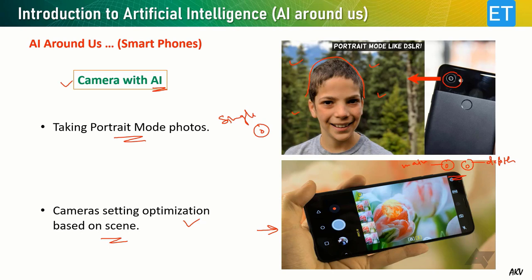Various mobile companies advertise their phones with an AI camera. Based on the scene — whether you're photographing food, a room, a flower, or a natural scene — the camera settings are automatically adjusted by AI to get the best photograph. These settings include exposure, shutter speed, ISO level, camera focus, and aperture. This is another example of AI use in mobile phones.